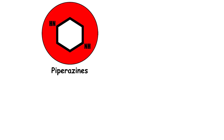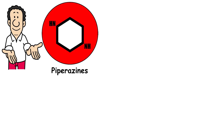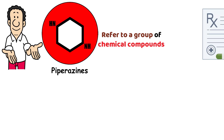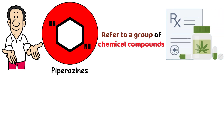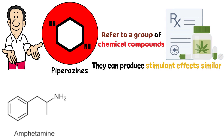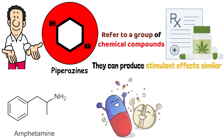Piperazines refer to a group of chemical compounds often used as recreational drugs. They can produce stimulant effects similar to amphetamines and are sometimes found in party pills or legal highs.